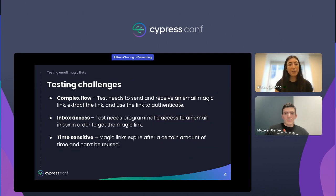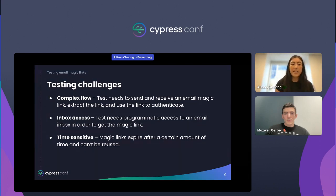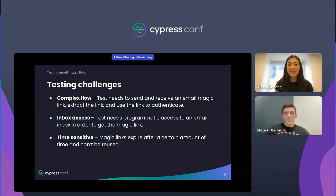While email magic links are great, they are more challenging to test than a traditional password flow. It's fairly complex — your test needs to be able to send and receive an email magic link, access that link, and use it to authenticate.